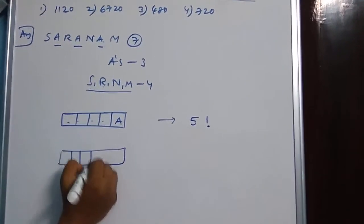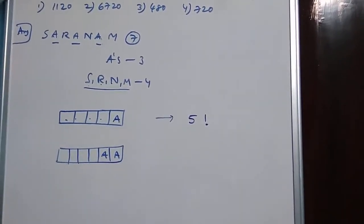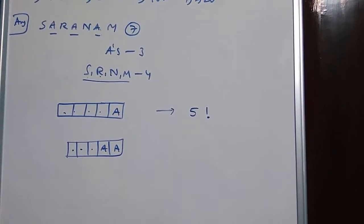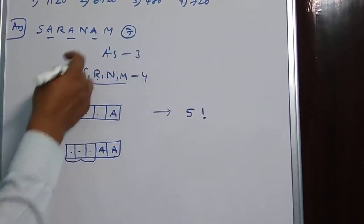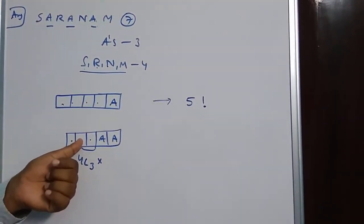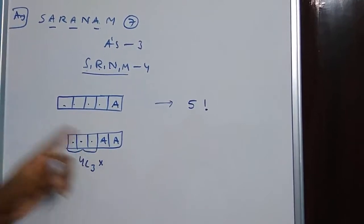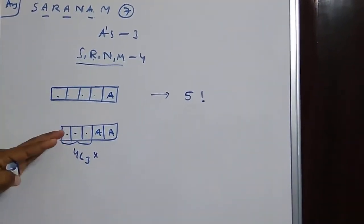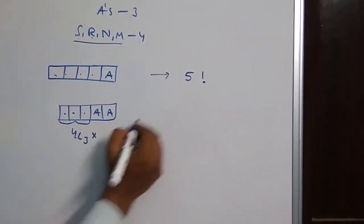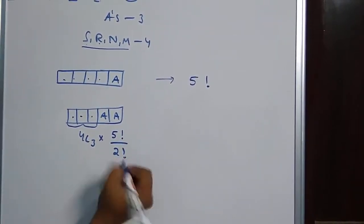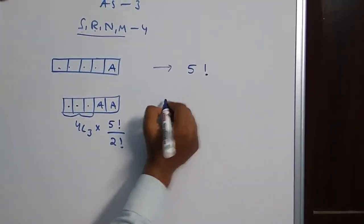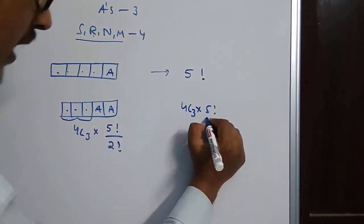Second case: 2 A's are fixed. The remaining 3 places are filled by selecting 3 letters from the 4 distinct letters in 4C3 ways. Since 2 A's are repeated, the 5-letter word arrangement gives 5 factorial divided by 2 factorial. So the count for this case is 4C3 into 5 factorial by 2 factorial.